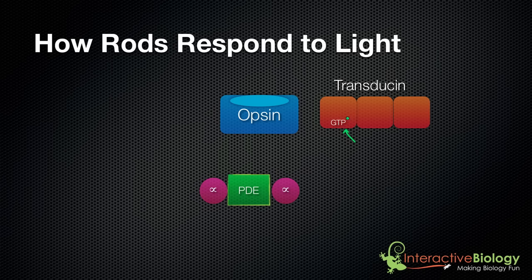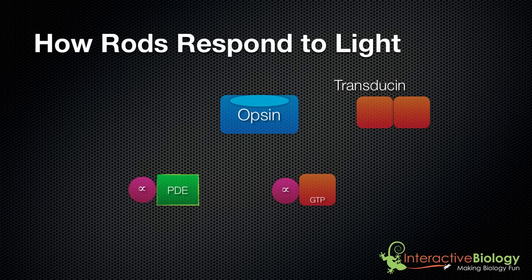Once that happens, that subunit is activated. It leaves the other two subunits behind and goes over to the alpha subunit of the phosphodiesterase, removing that alpha subunit. We said the goal was to free up this phosphodiesterase — we're almost there. We have one alpha subunit removed, but we still have one more alpha subunit remaining.